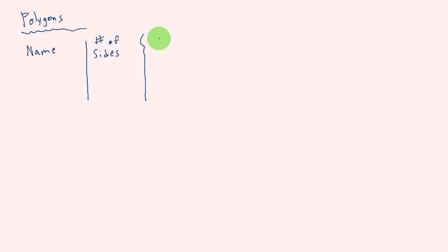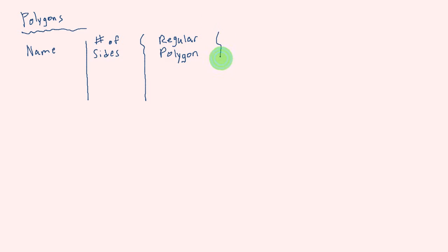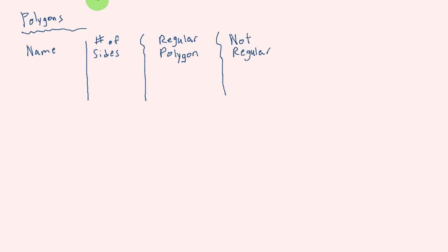We have one type known as a regular polygon — I'll get to how we define a regular polygon in a minute. And also there's another type of polygon, and if they're not regular polygons, then they're not regular. So I'm just going to write 'not regular' right here.